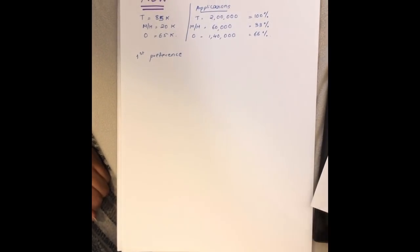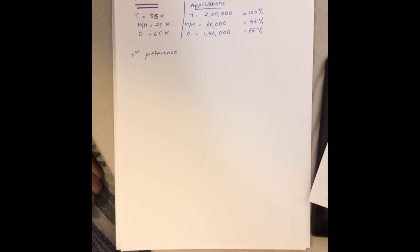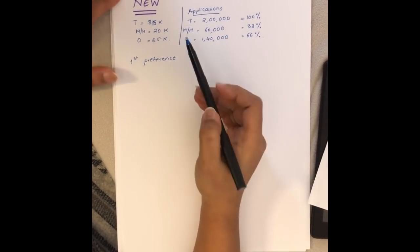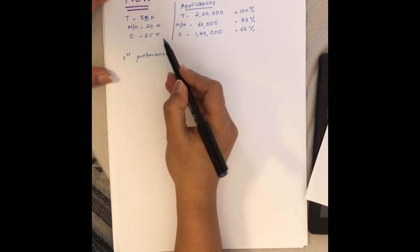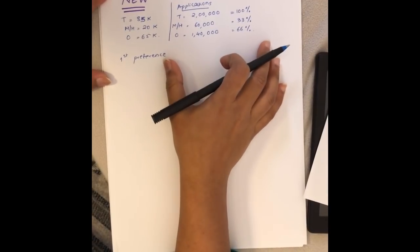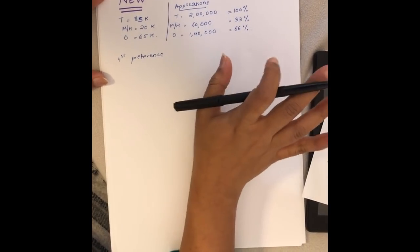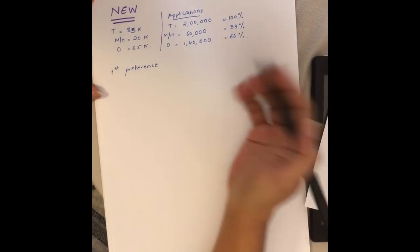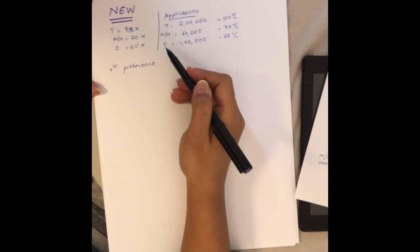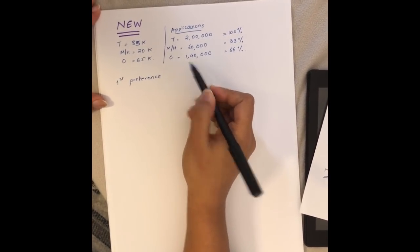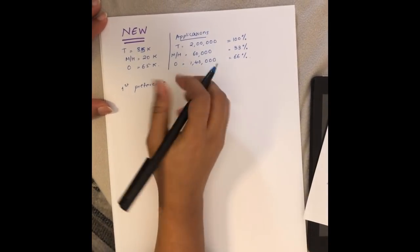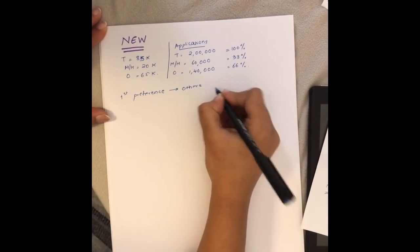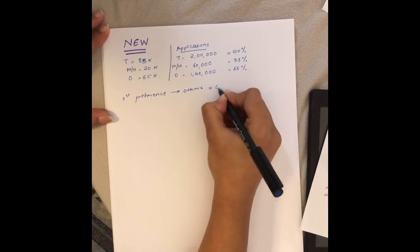Now coming to the new system that Trump has proposed today, we'll use a similar approach. We have a total of 85k slots available, out of which 20,000 is for masters and 65,000 is for others. We're using the same application numbers: 2 lakh applicants, 60,000 masters and 140,000 others (33 and 66 percent).